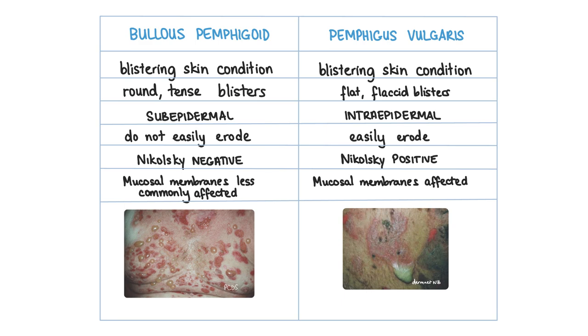Also, pemphigus vulgaris commonly affects mucosal membranes, whereas this is less common for bullous pemphigoid.